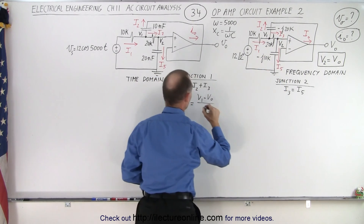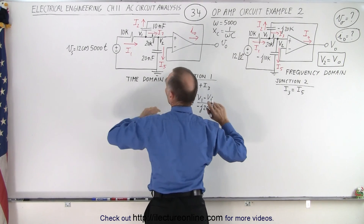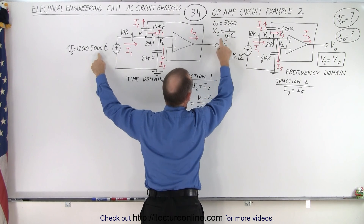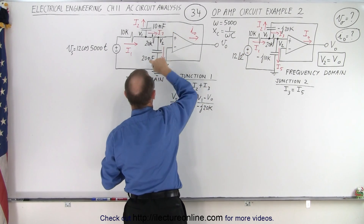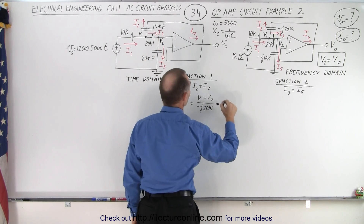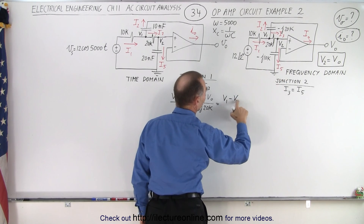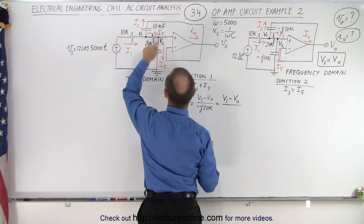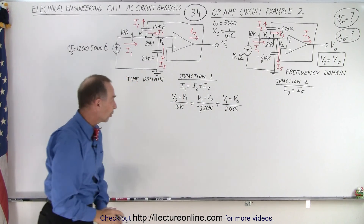Over here we have a minus J20k. I didn't mention that in this case our frequency was 5,000. So to find the impedance of the capacitors, it would be 1 over 5,000 times the capacitance, which are given in terms of nanofarads. For the third current, that's the current from there to there: V1 minus V2. Now V2 is the same as the output voltage, so we can change this to V_out divided by the resistance in between, which is 20k. So here we have our first equation.